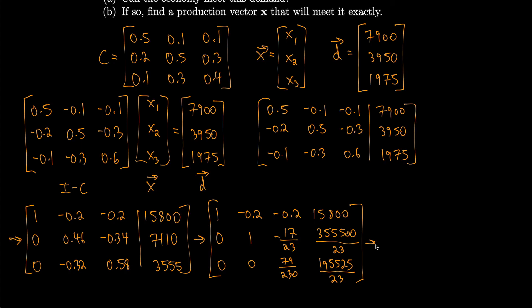It's not the most pleasant thing in the entire world, but we can do it. We'll divide this row by 79/230, leave the others the same, and then we'll have a leading 1 in row echelon form. So 1, -0.2, -0.2, 15,800; 0, 1, -17/23, 35,500/23; 0, 0, 1, 24,750.